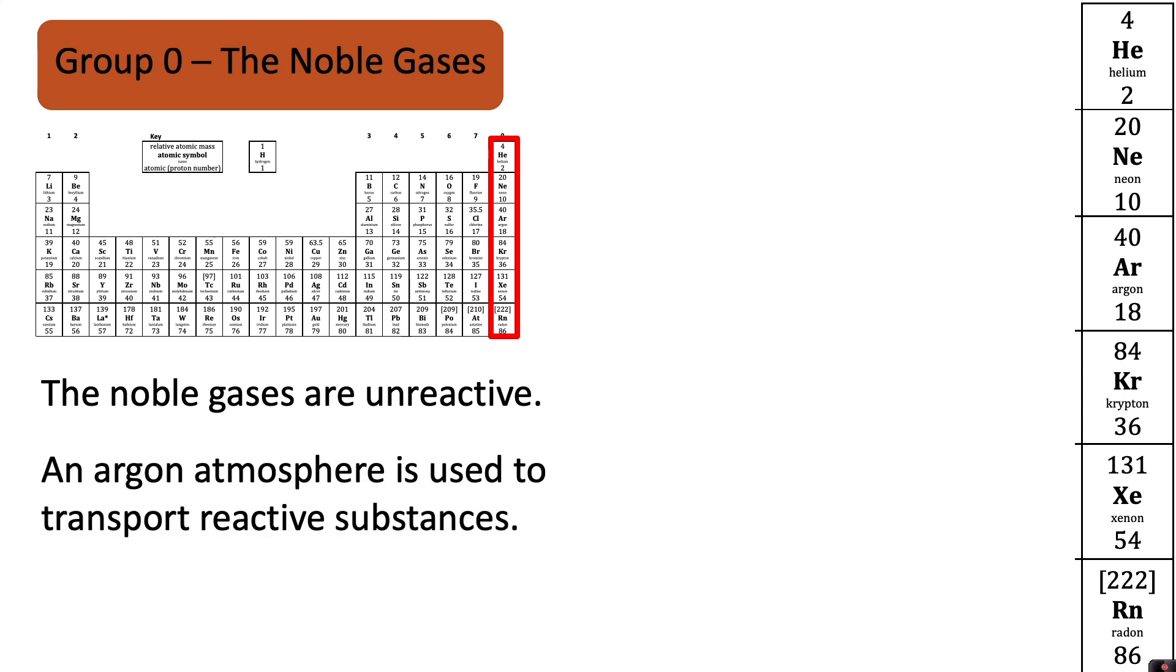For example an argon atmosphere is used to transport reactive substances. If you had an element that was very reactive you would not want it to be transported with an atmosphere of air because air contains oxygen and there is the potential that that oxygen could react with the substance. So if you don't want your substance to react it's really useful being able to package it with a noble gas because you know that won't react with your substance.